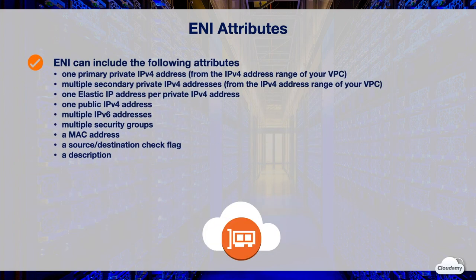An ENI is a virtual network interface attached to an EC2 instance in your VPC. Each ENI can have one primary private IPv4 address and multiple secondary private IPv4 addresses from the IP range of your VPC. It can also have one Elastic IP per private IPv4 address, one public IPv4 address, and multiple IPv6 addresses.